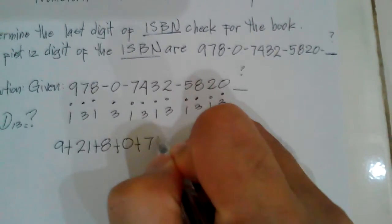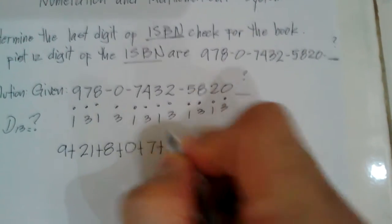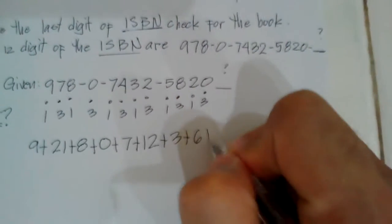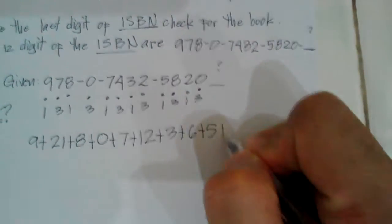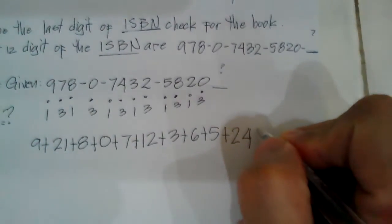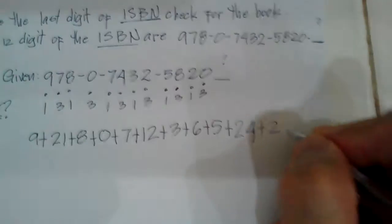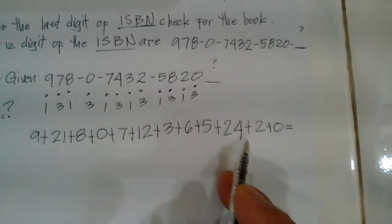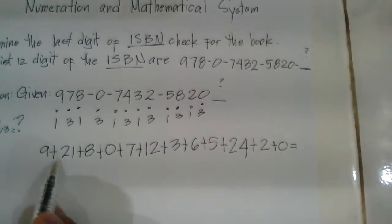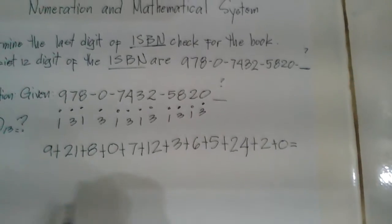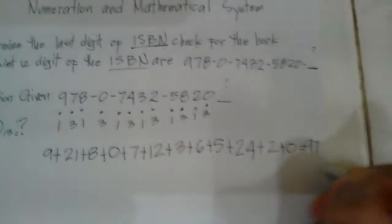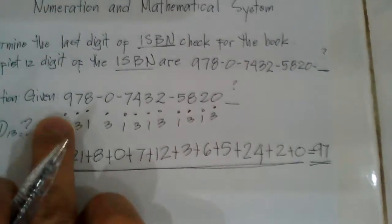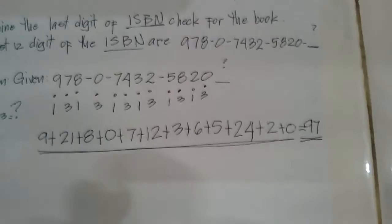Working through the multiplications: 4 times 3 equals 12, 3 times 1 equals 3, 2 times 3 equals 6, 5 times 1 equals 5, 8 times 3 equals 24, 2 times 1 equals 2, and 0 times 3 equals 0. The summation of all these values gives us 97 total.